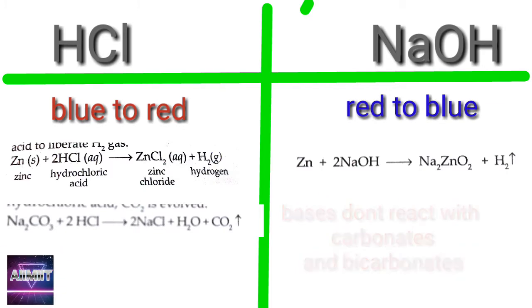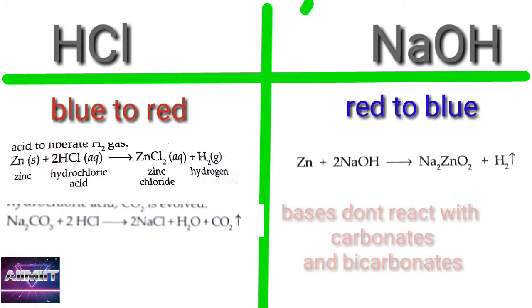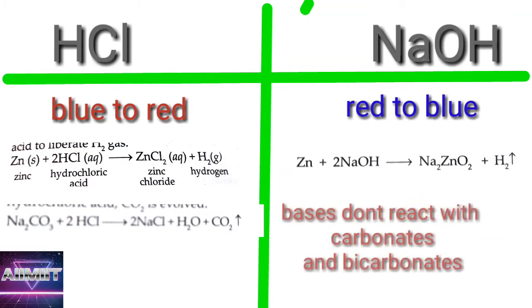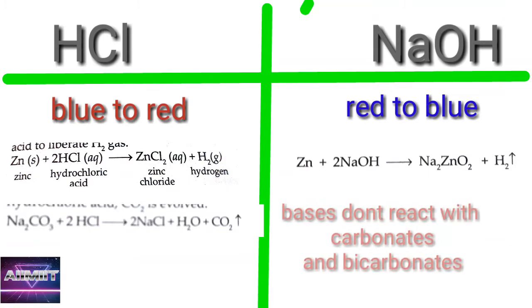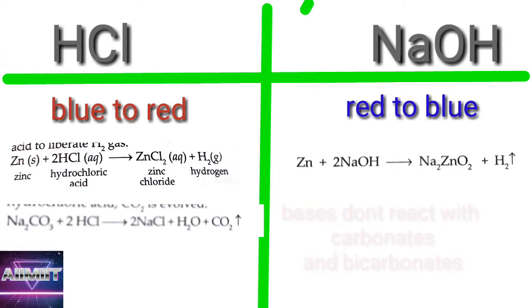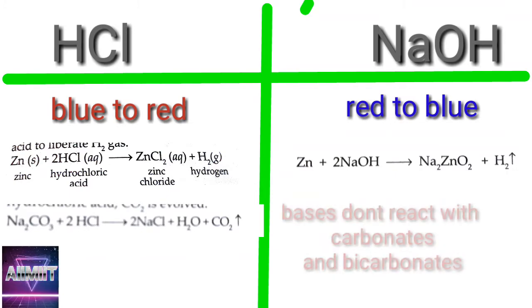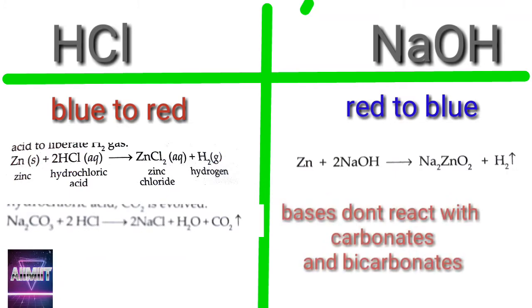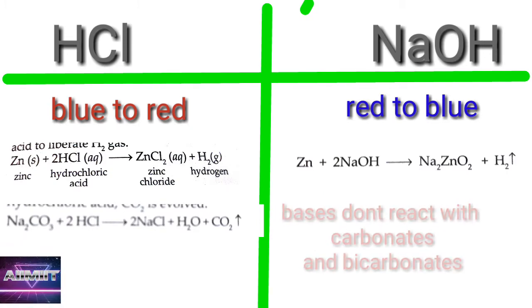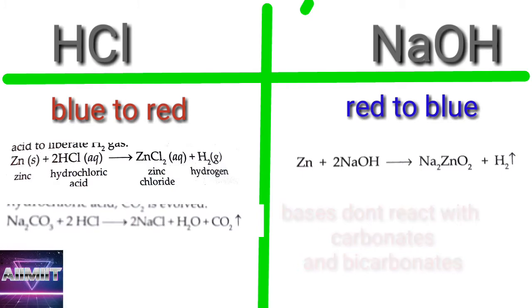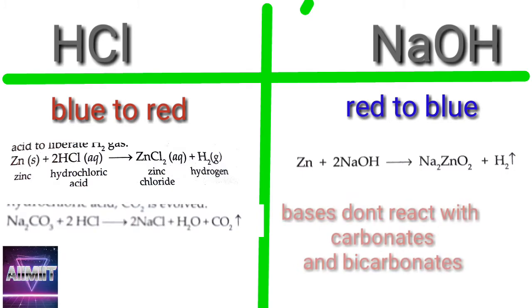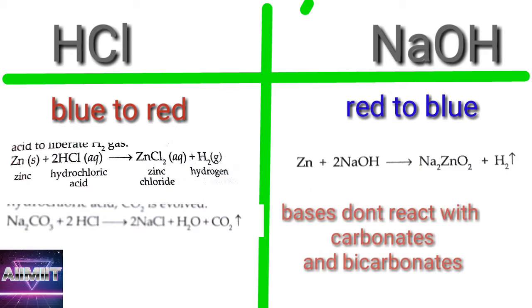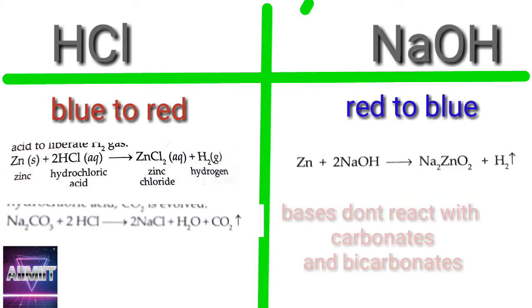The reactions are: 2HCl + Zn → ZnCl₂ + H₂ gas, whereas 2NaOH + Zn → Na₂ZnO₂ + H₂ gas. The third differentiation: acids react with carbonates and bicarbonates and liberate carbon dioxide, whereas bases do not react with carbonates and bicarbonates. For example, HCl reacts with sodium carbonate to give NaCl, H₂O, and CO₂.